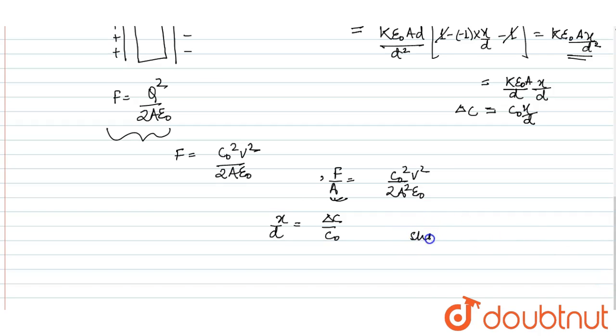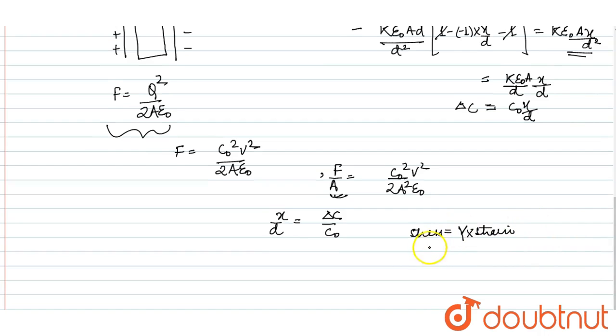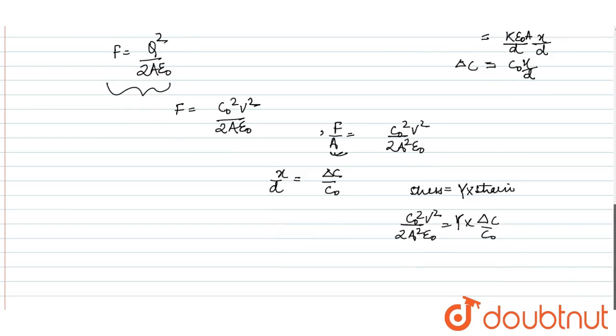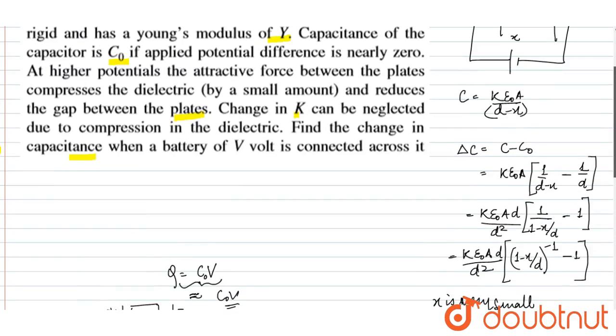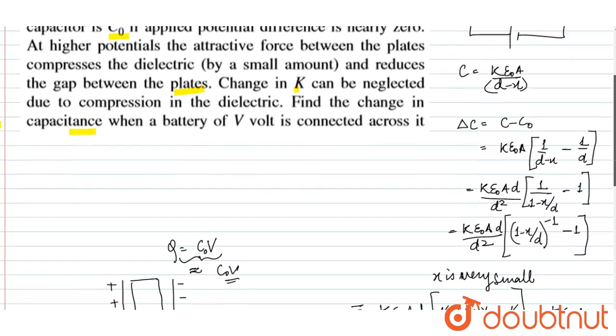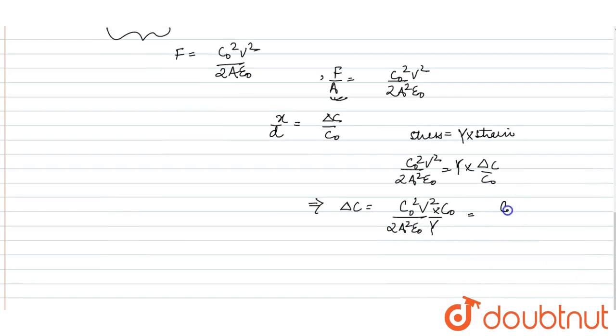Since stress equals Young's modulus times strain, stress = C0²V²/(2A²ε₀). So the change in capacitance ΔC = C0²V²/(2A²ε₀) × C0/Y, which gives us our final answer: C0³V²/(2A²ε₀Y). This is Young's modulus.